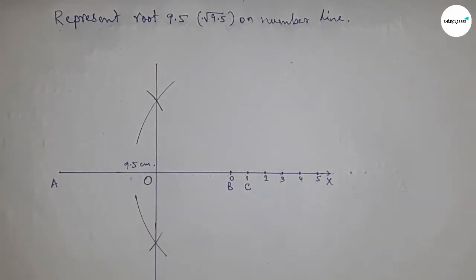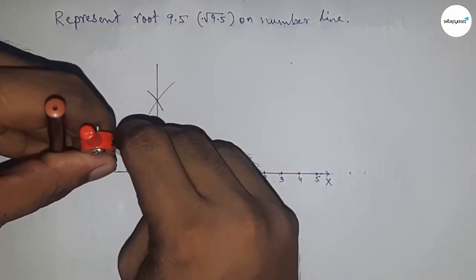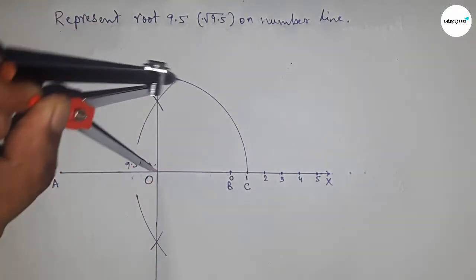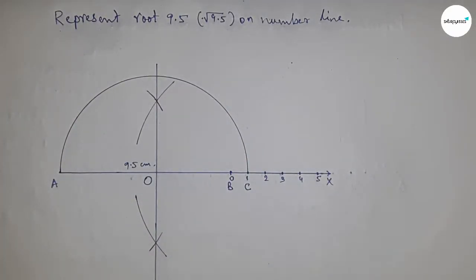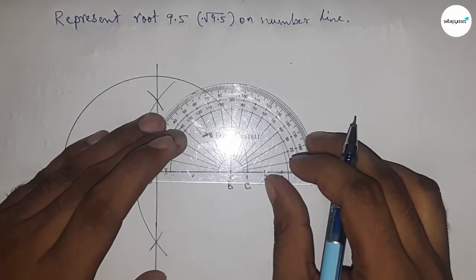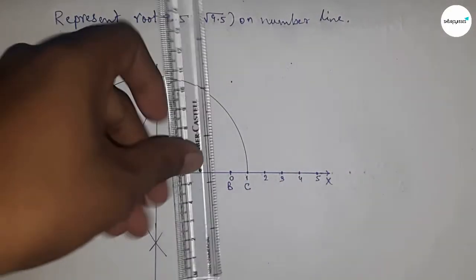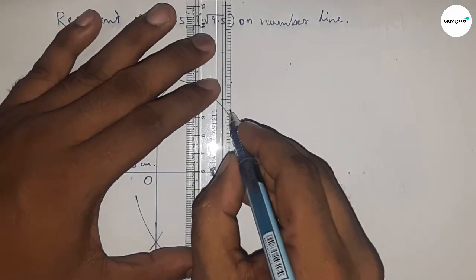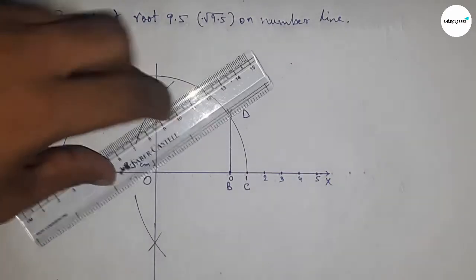Now take the distance OA and OC to draw a semicircle. Next, draw a 90-degree angle at point B using a protractor. Join this line, which meets the semicircle at point D.